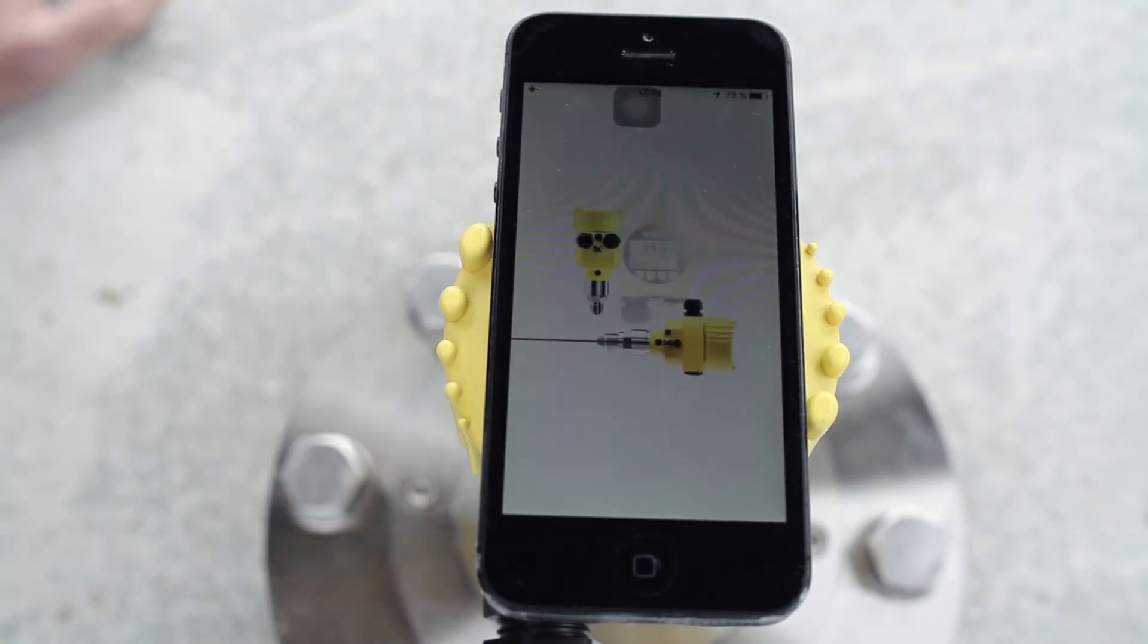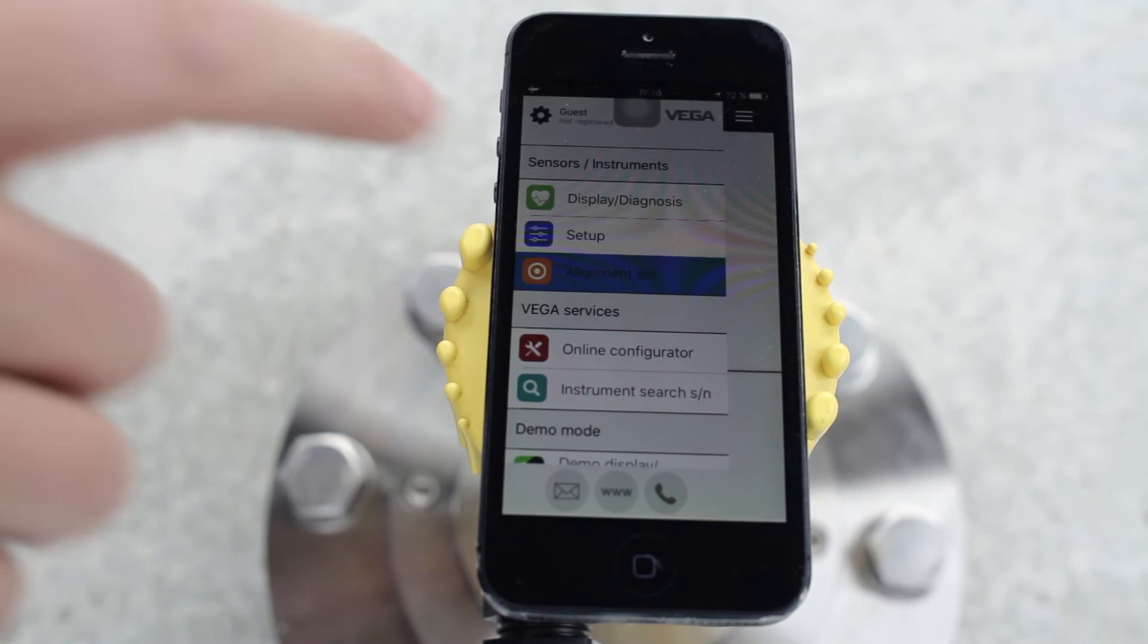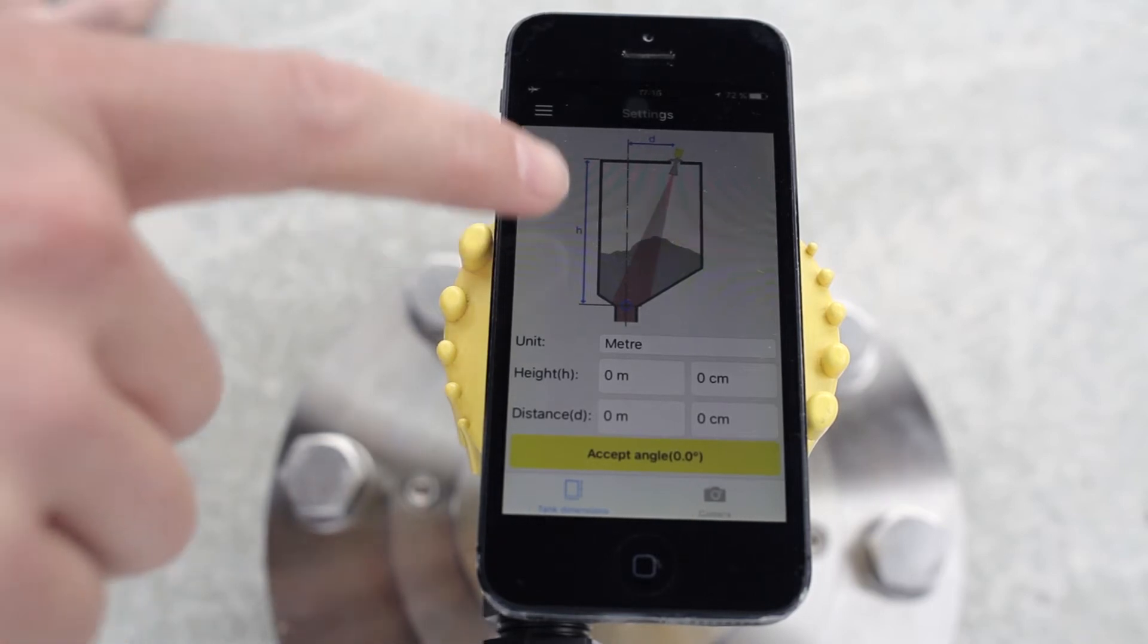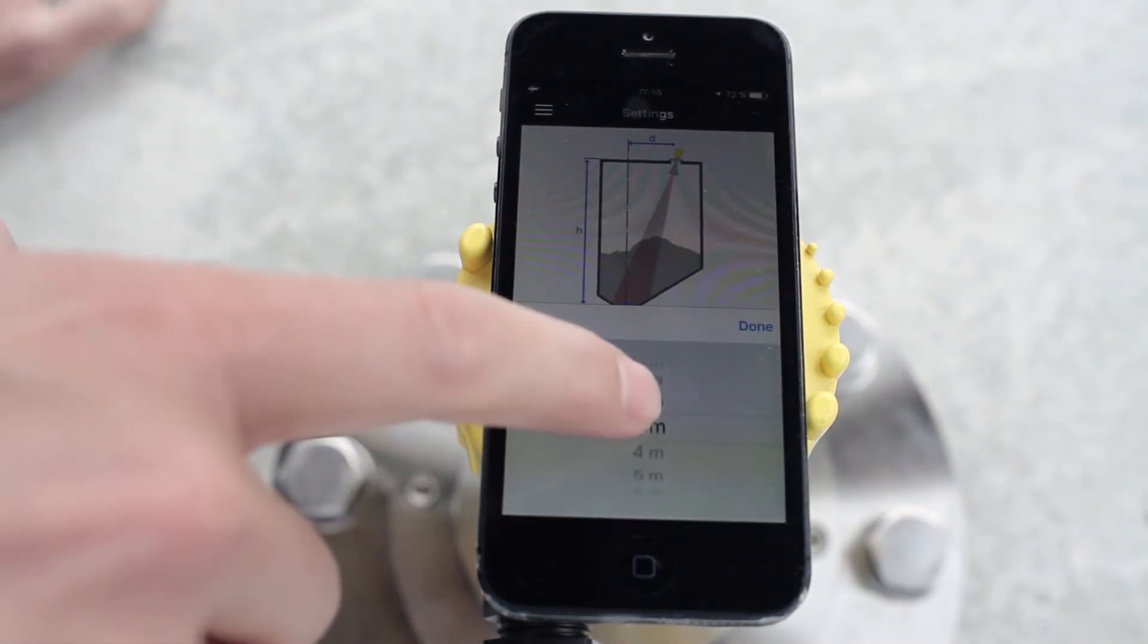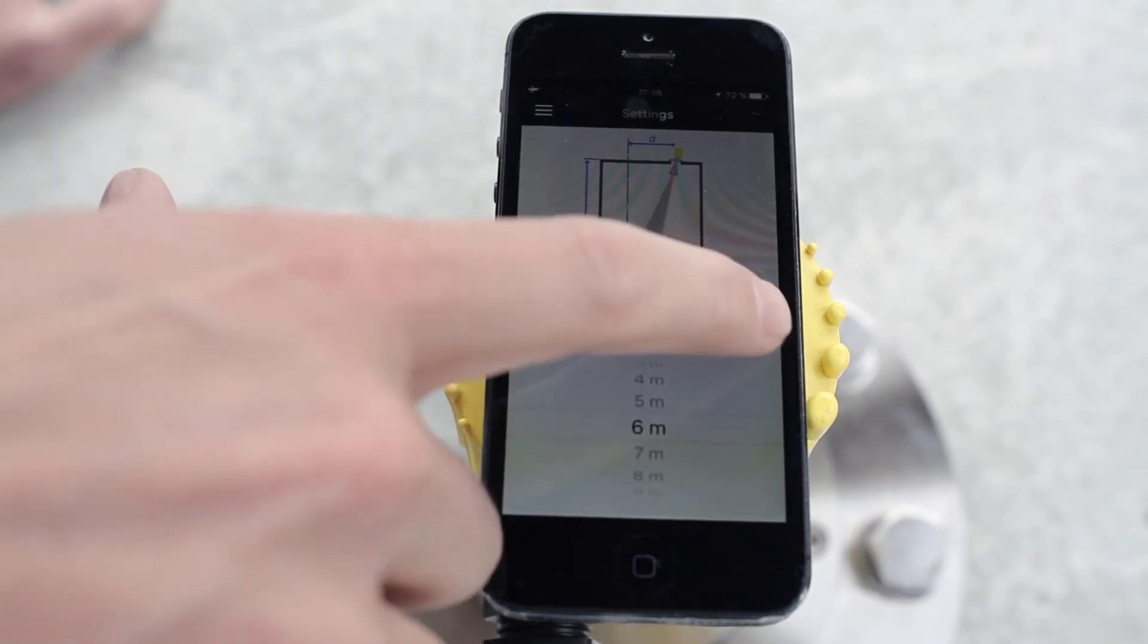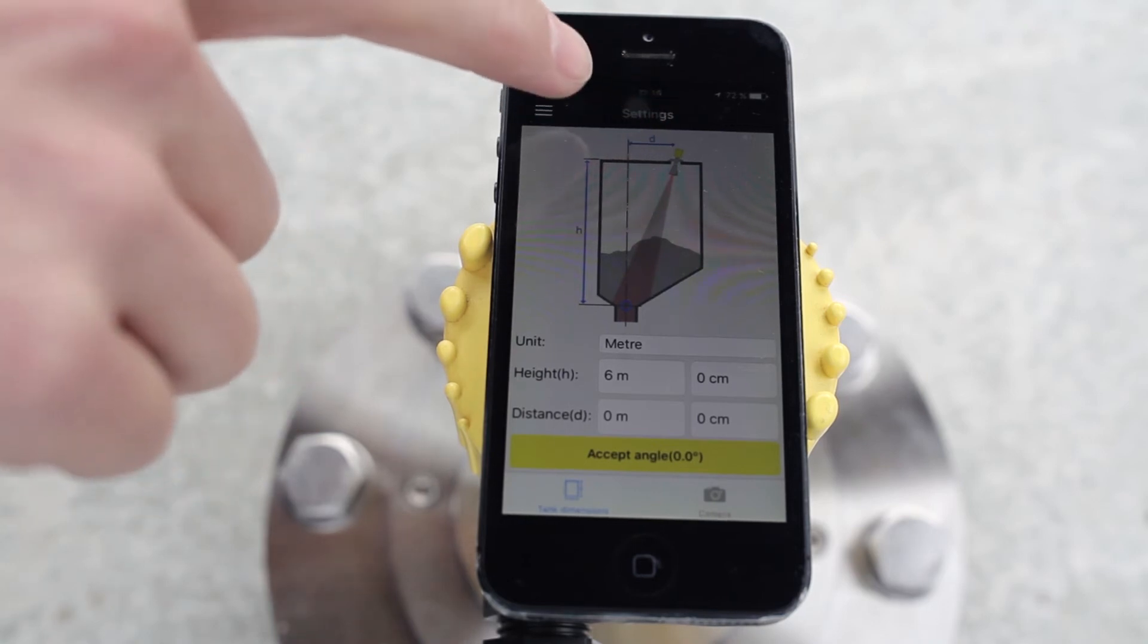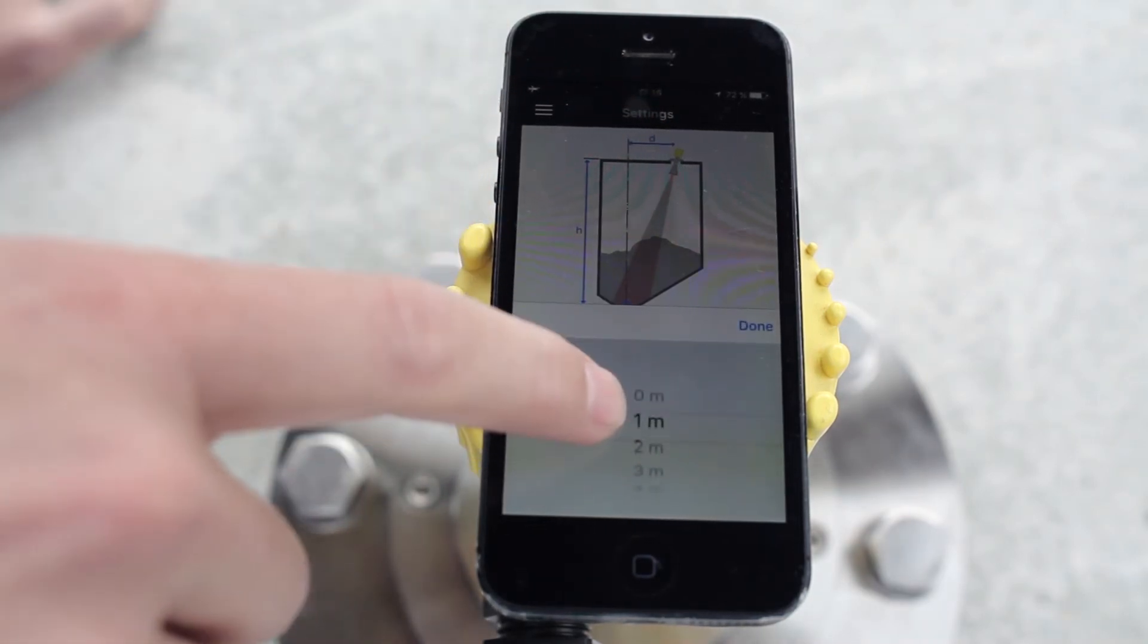In the Vega Tools app you find the alignment aid. With this alignment aid you can make the adjustment very easy. You need the height of the silo—in our case it's about six meters—and then you need the distance from the sensor position to the outlet of the silo. In our case, 1.25 meters.